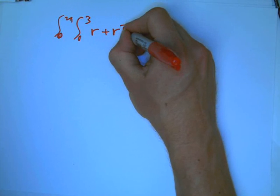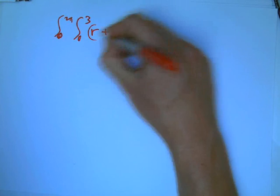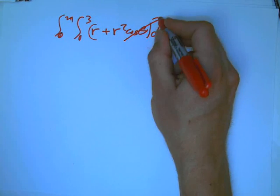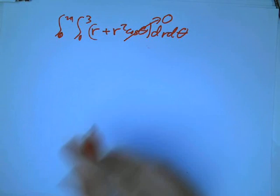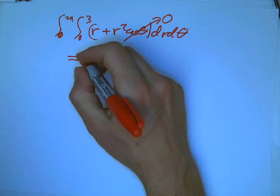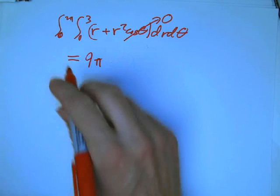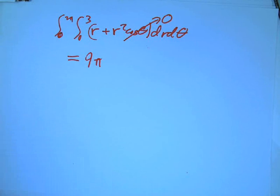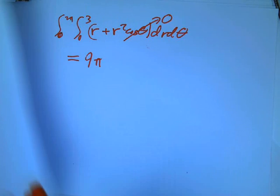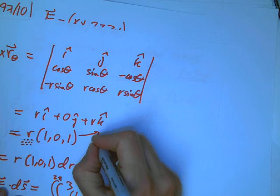We get integral 0 to 2 pi, integral 0 to 3. When we do that dot product, we get r plus r squared cosine theta, dr d theta. Well, 0 to 2 pi cosine theta, that's just going to die. And that's that cancellation that we kind of expected. And then the rest of the integral is really easy, and you get 9 pi.